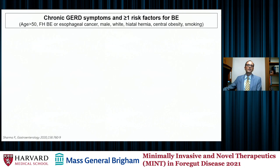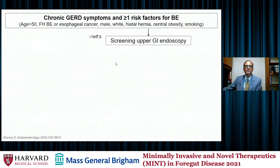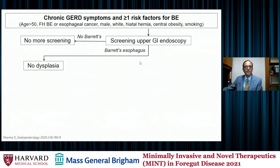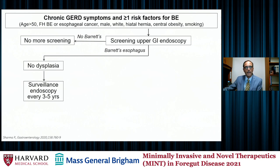If you have a patient with chronic GERD symptoms and at least one or more risk factors for Barrett's esophagus, consider screening them with an upper GI endoscopy. If there's no Barrett's, no more screening is necessary. If there is Barrett's, the next question is: did those biopsies show any dysplasia? If there's no dysplasia and sufficient biopsies were obtained using a standard protocol, it's reasonable to survey these patients with endoscopy every three to five years, provided sufficient biopsies were obtained to assess that Barrett's segment.